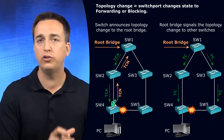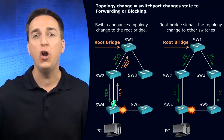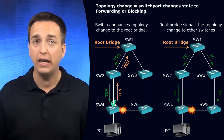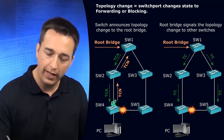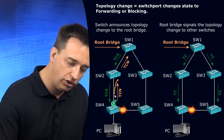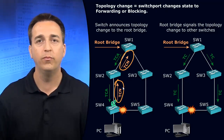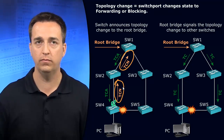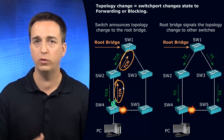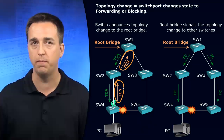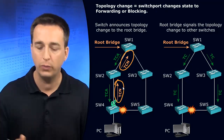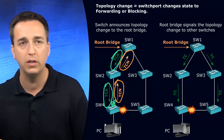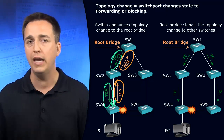Now that Switch 4 has transitioned that port to the root port, it has to notify somebody in the topology that this change has occurred. It does this with the topology change notification. Who does it send the topology change notification to? The root bridge. In this example, Switch 1 is the root bridge. It receives the topology change notification, and as a result, it has to respond back with the topology change acknowledgement, letting Switch 4 know that it received the notification.